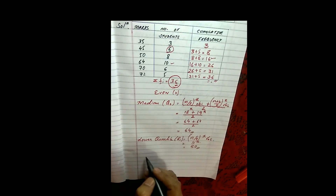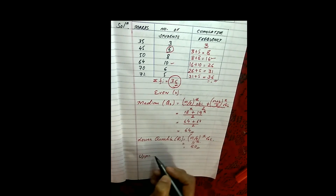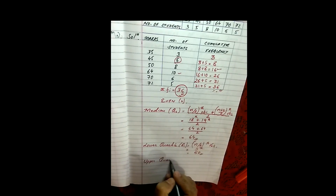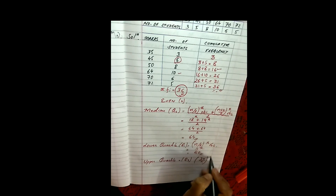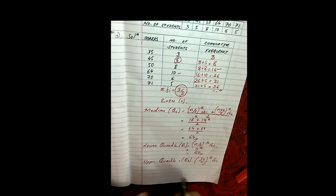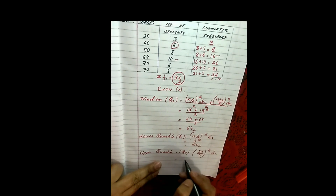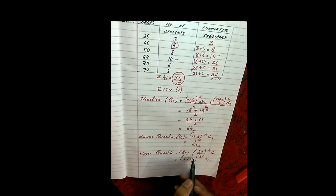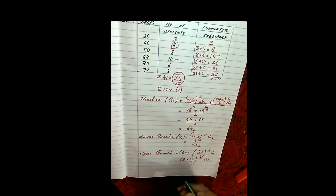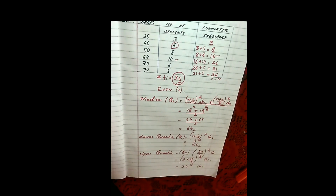Similarly, if you find the upper quartile: upper quartile is denoted by Q3, and it equals the 3n by 4th observation, since n is even. So this is 3 into 36 by 4th observation. 4 nines are 36, then 9 threes are 27. So we have to look at the 27th observation, that means the 27th boy.